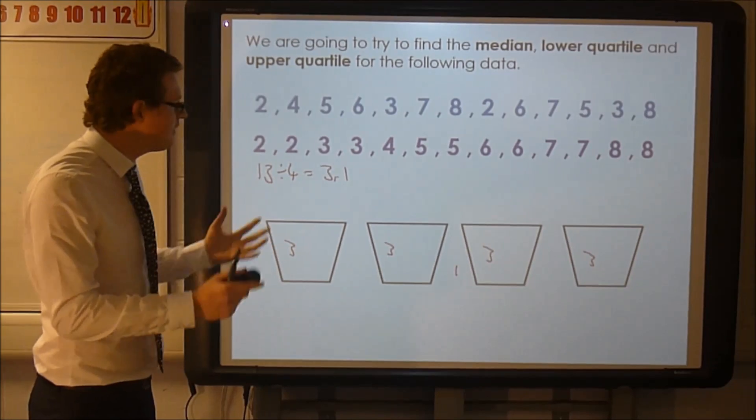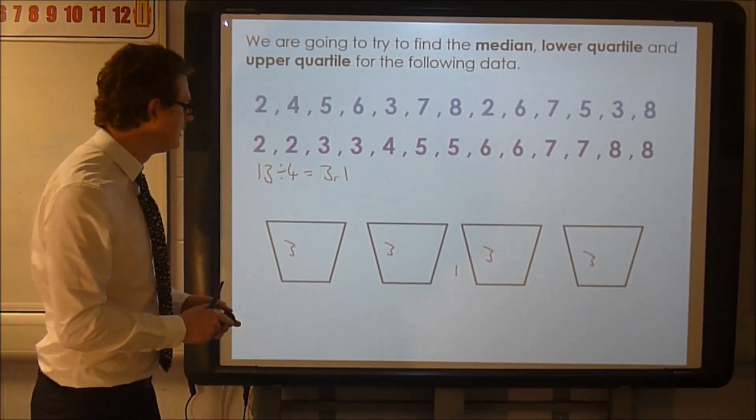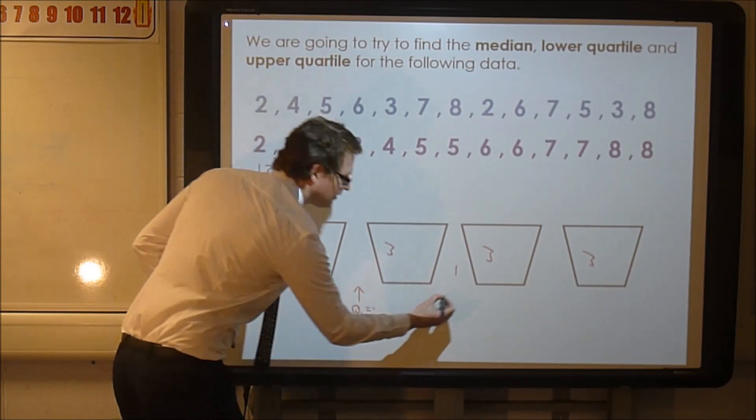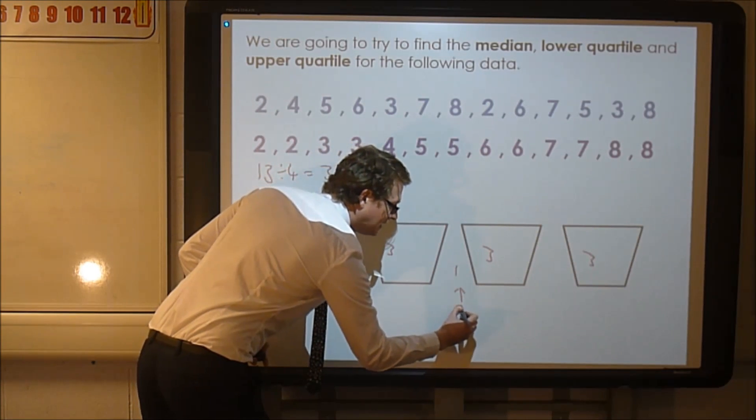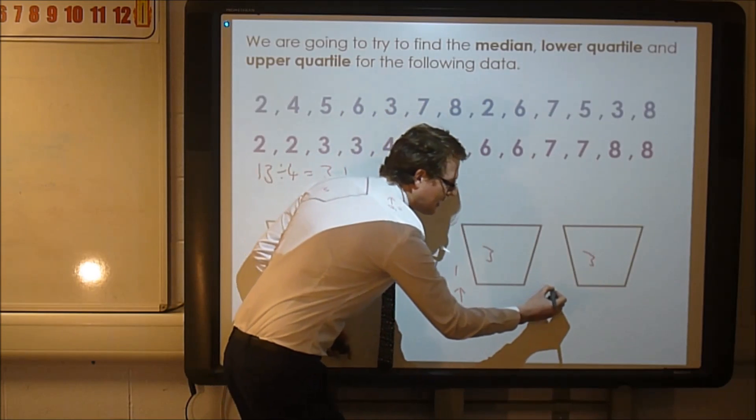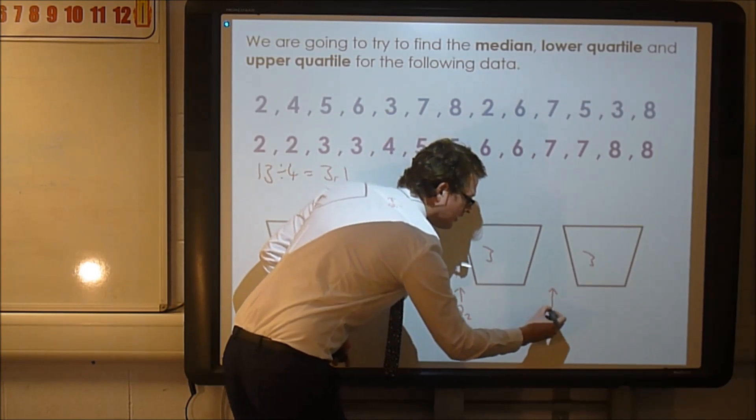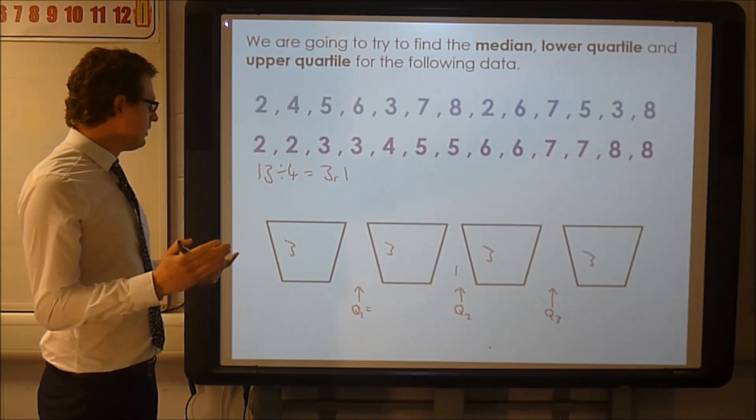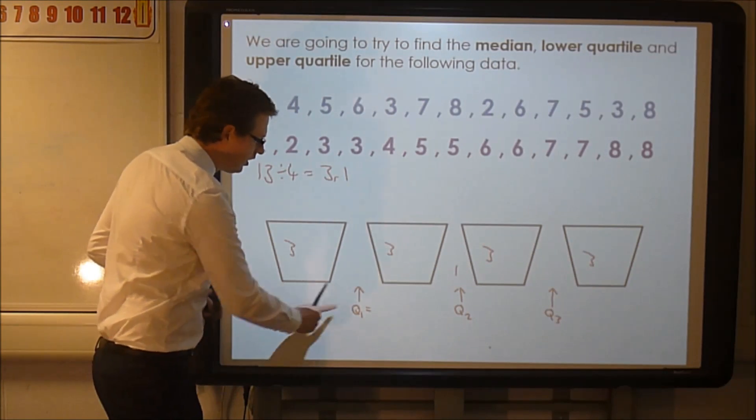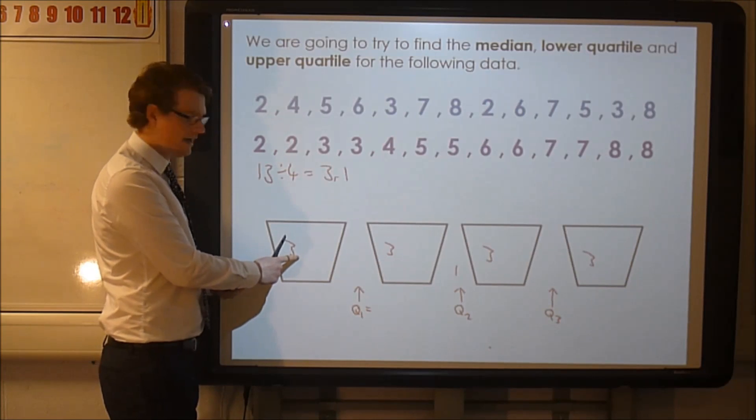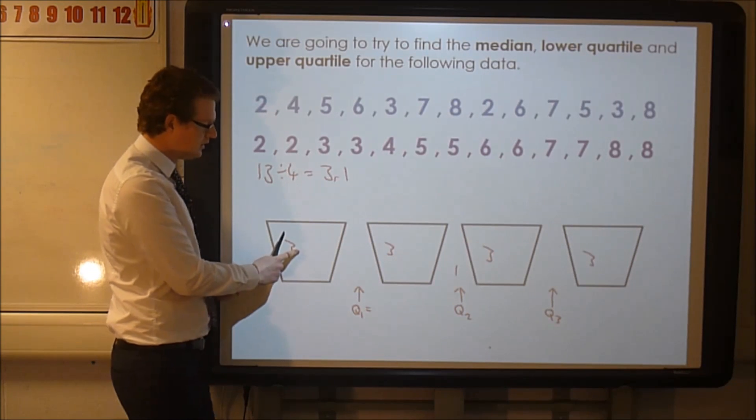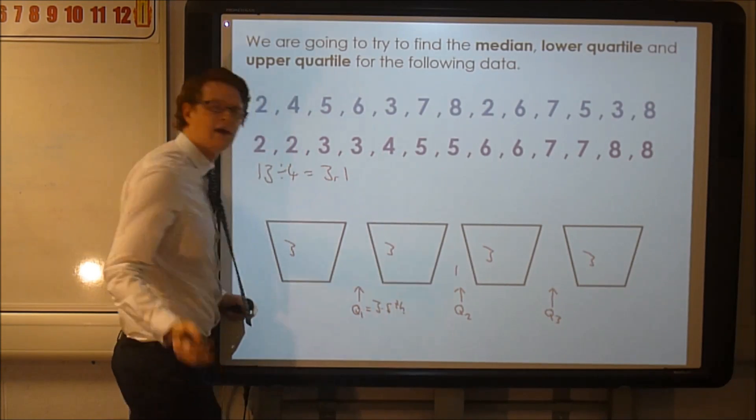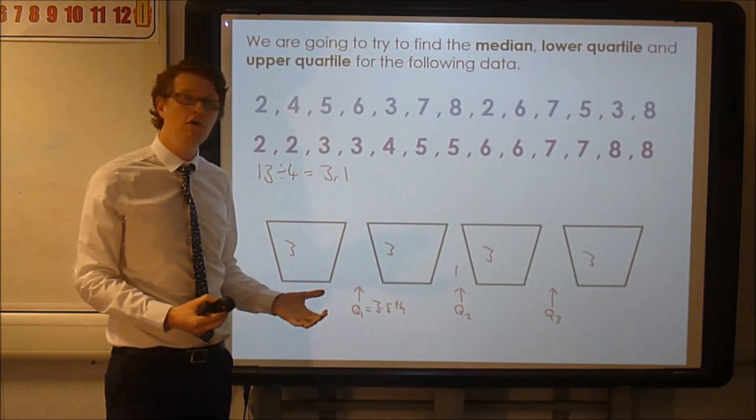And we can see this looks very similar to my picture beforehand. So this would be the lower quartile Q1, this would be the median Q2, and here we're going to have the upper quartile Q3. So it looks like Q1, well, there's three values in there. So one, two, three. The fourth value's in there. So I'm going to say this is the 3.5th value. And that means somewhere between the third and fourth value.